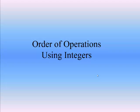Hi class. In this video I want to talk to you about order of operations using integers. So integers are numbers like negative 1, negative 2, negative 3, 0, 1, 2, 3 — nothing with fractions, nothing with decimals. Those are not integers.